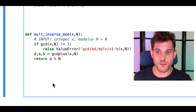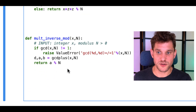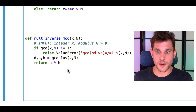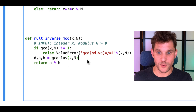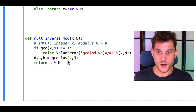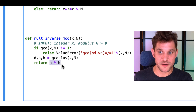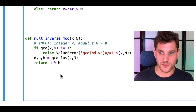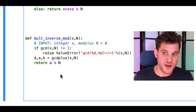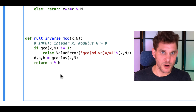Computing the multiplicative inverse essentially just calls back to the extended Euclidean algorithm. Once you can compute integers A and B such that A*x + B*n = 1, then A mod n is going to be your multiplicative inverse of x. So we've basically already solved this problem.